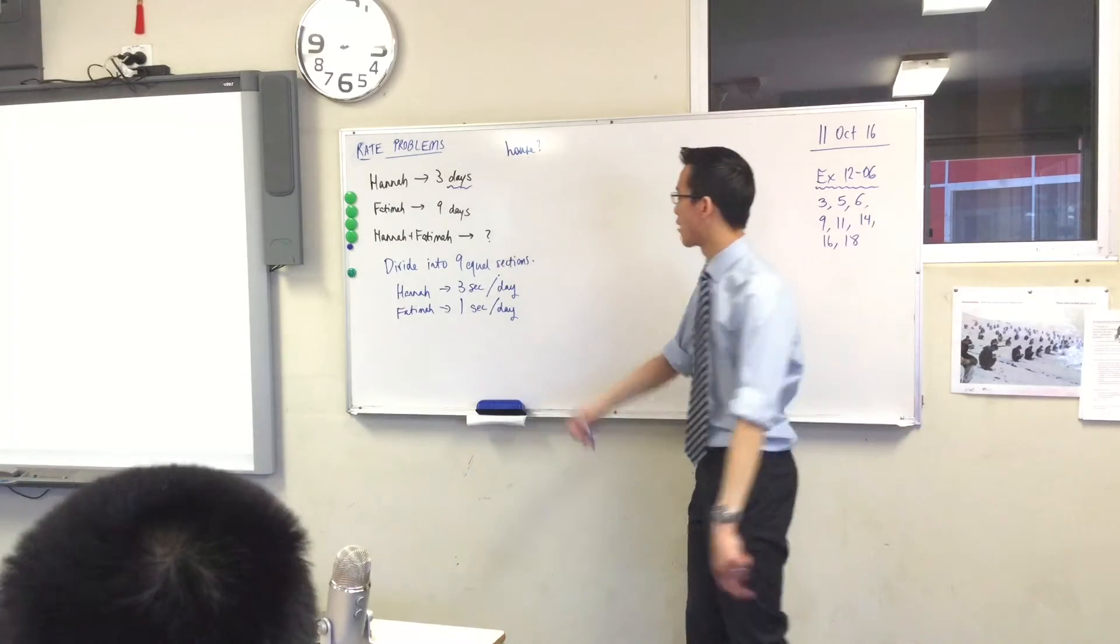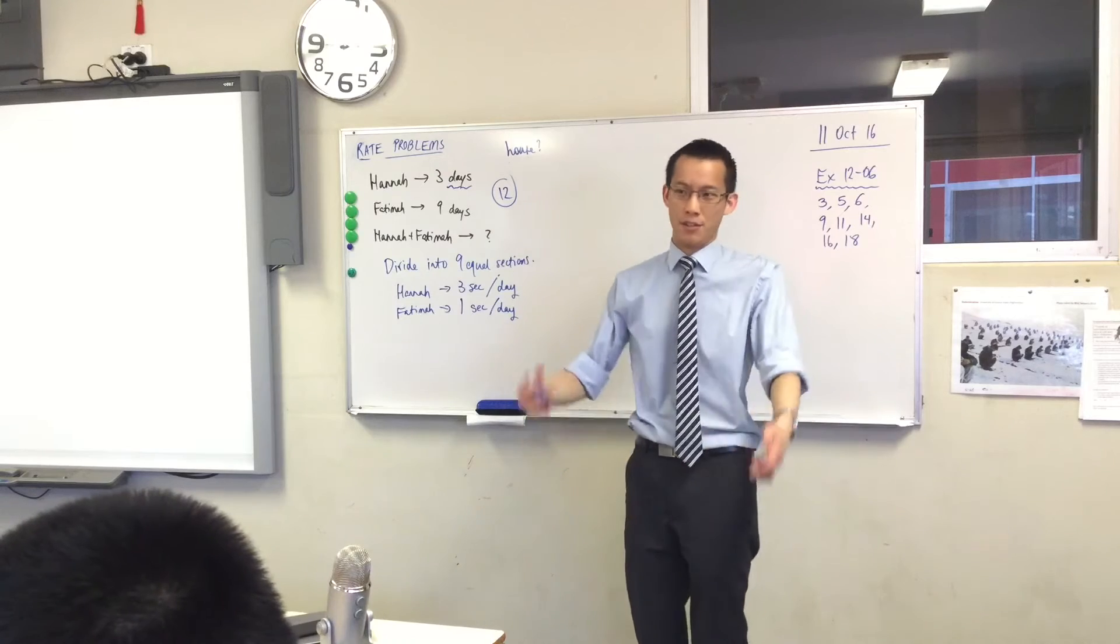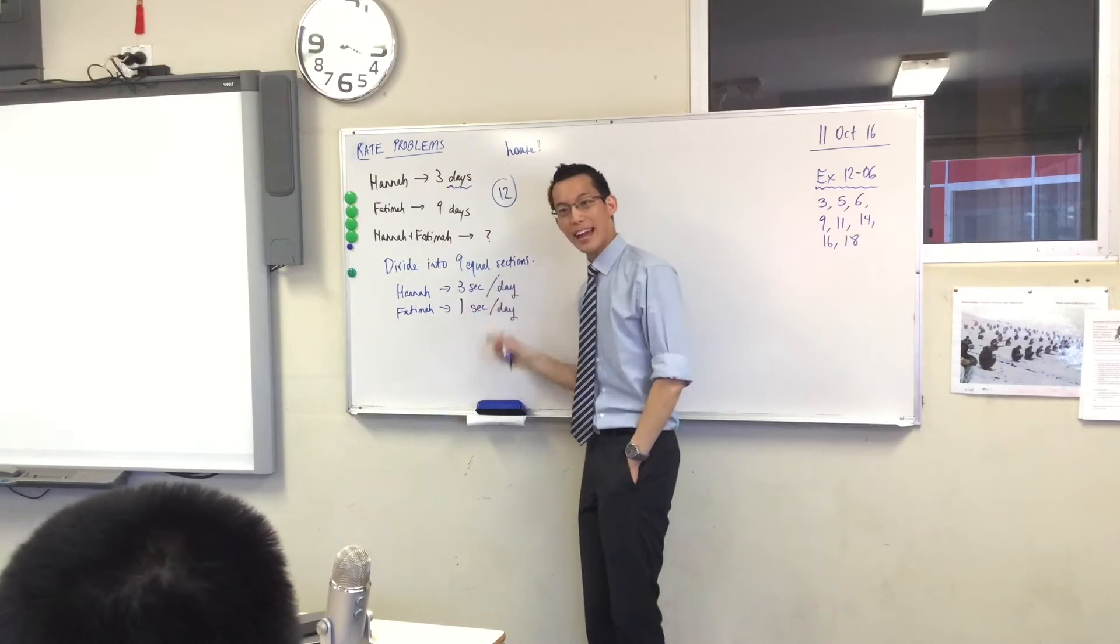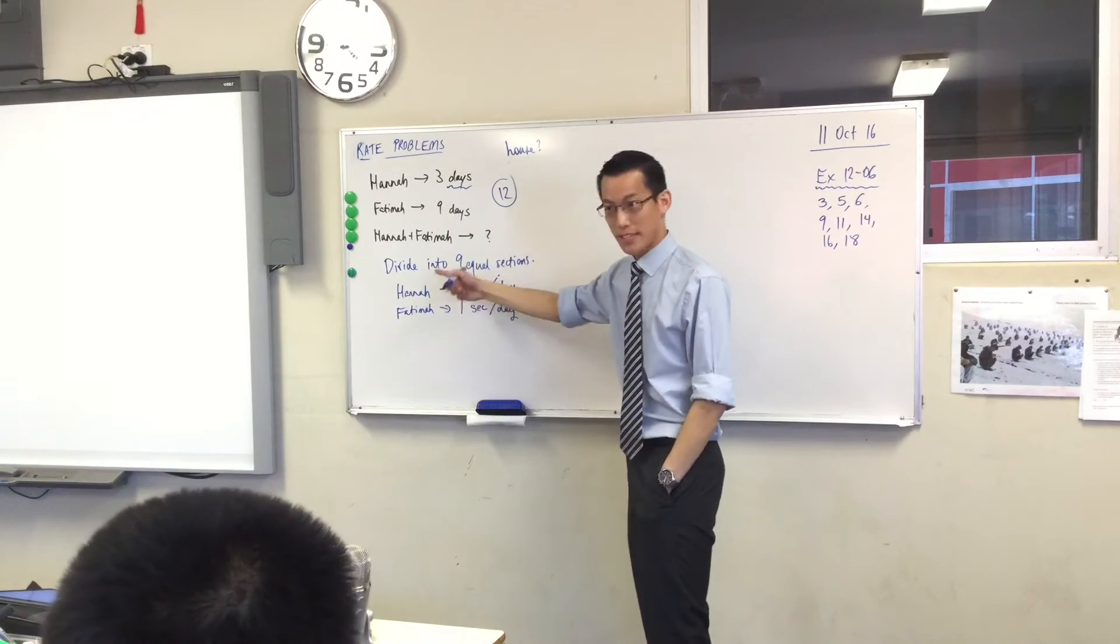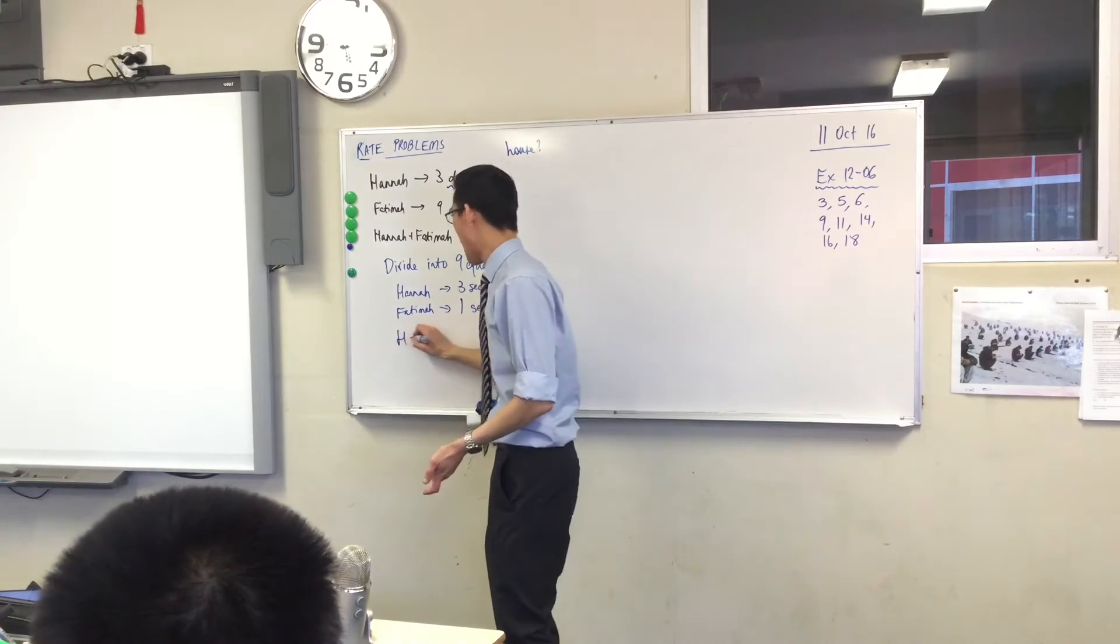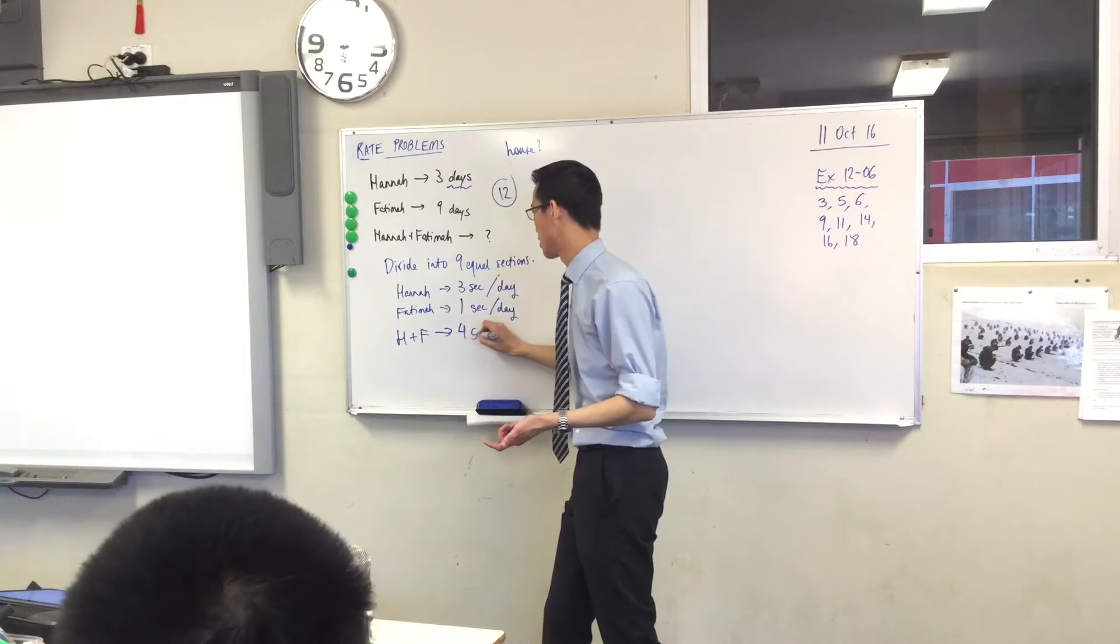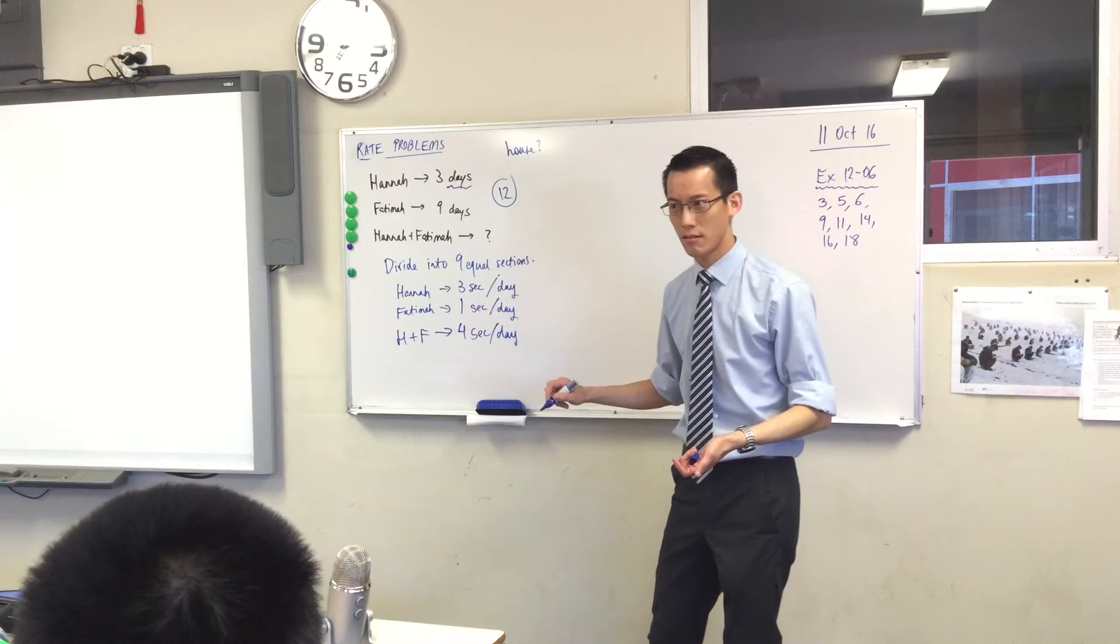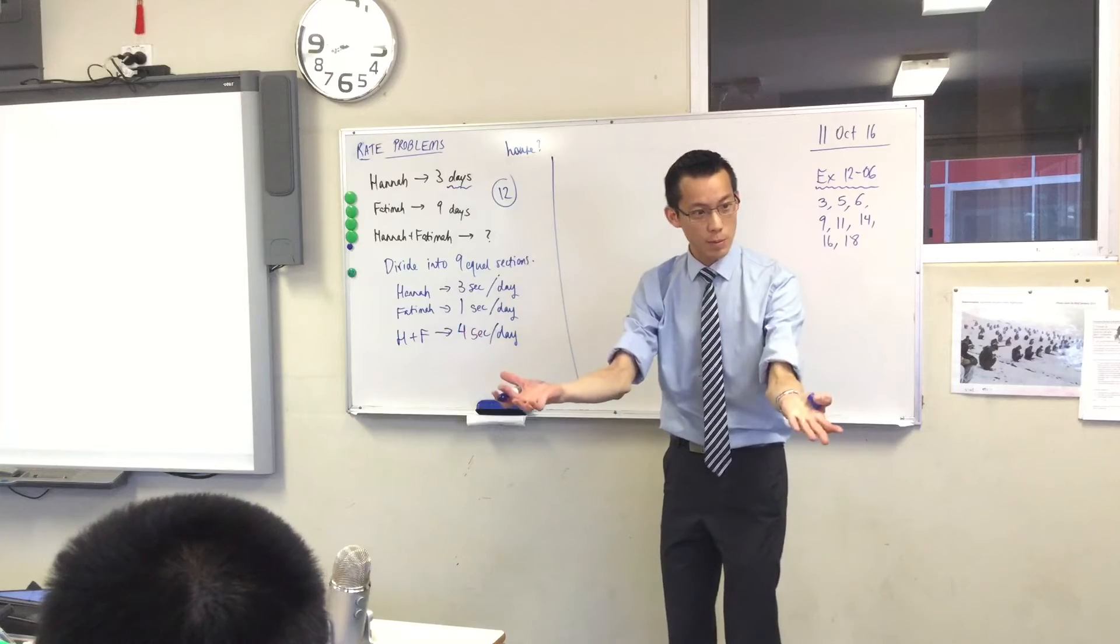Now look, here's the brilliant part, right? Before, you remember I said a common wrong answer is 12, right? Because people just add those, right? Well, you can't add these because they're times, but you can add these because they're rates, right? Hannah and Fatima together. One's going to paint three sections. The other one's going to paint one section. So in a day, Hannah and Fatima together will do four sections per day. Now, how many sections do they have to do in total again? Nine. So I've got nine sections,